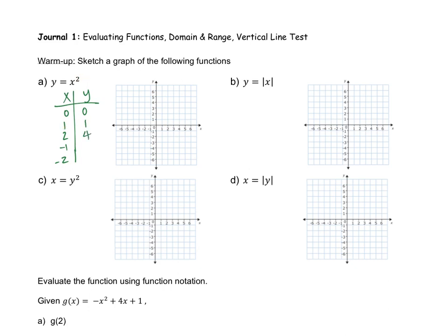And negative 1 squared is positive 1, and negative 2 squared is positive 4. These are coordinates, so this would be the origin. I'm going to plot all of them and see what the graph looks like. And there we go — we have our parabola shape. So this here would be a quadratic function.